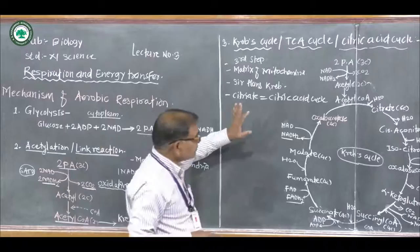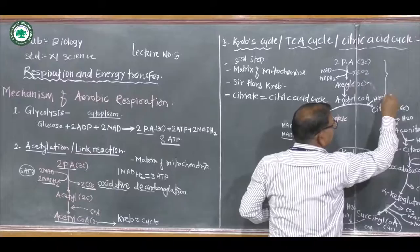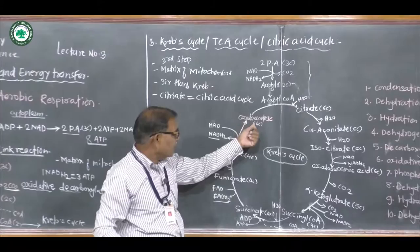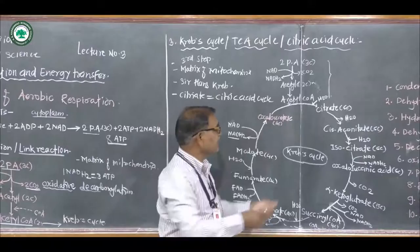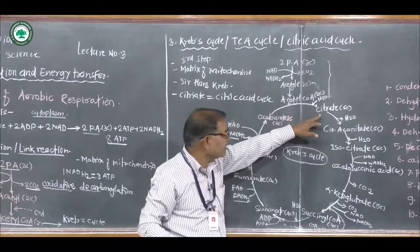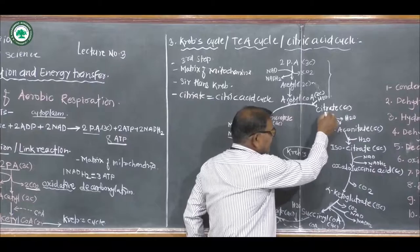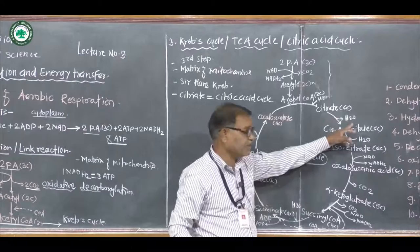In the details of the Krebs cycle: first, pyruvic acid undergoes acetylation in the matrix of mitochondria. Acetyl coenzyme A (a two-carbon compound) combines with oxaloacetate (a four-carbon compound) by addition of a water molecule to form citrate. Citrate is the first stable compound, hence the cycle is called the citric acid cycle.